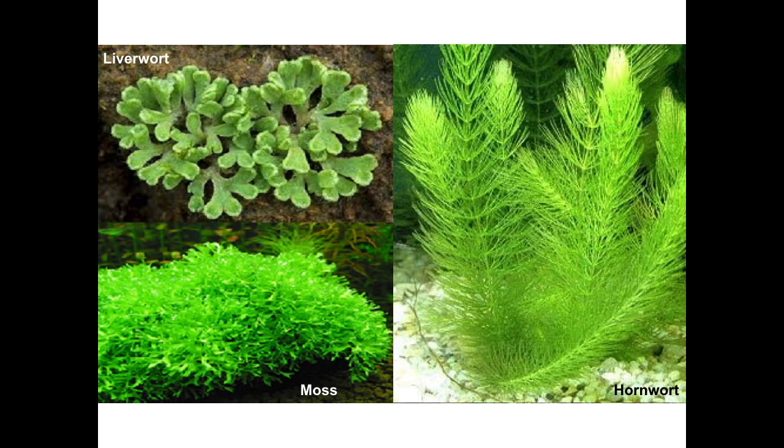Here are some examples of bryophytes. Liverworts tend to have broad, flat leaves, although they tend to be very small. Mosses tend to have very tiny, almost feathery leaves. Hornworts can sometimes grow taller than your typical bryophytes because hornworts tend to be more aquatic in nature. The reason they can stand up without vascular tissue is because they're surrounded by water and have no need for a complex system for moving that water.